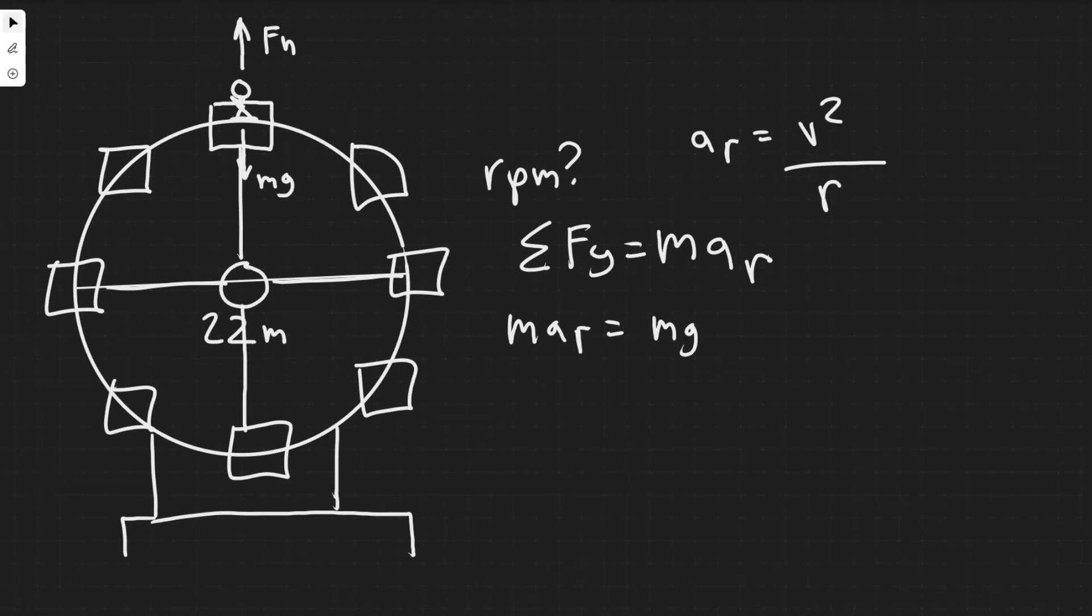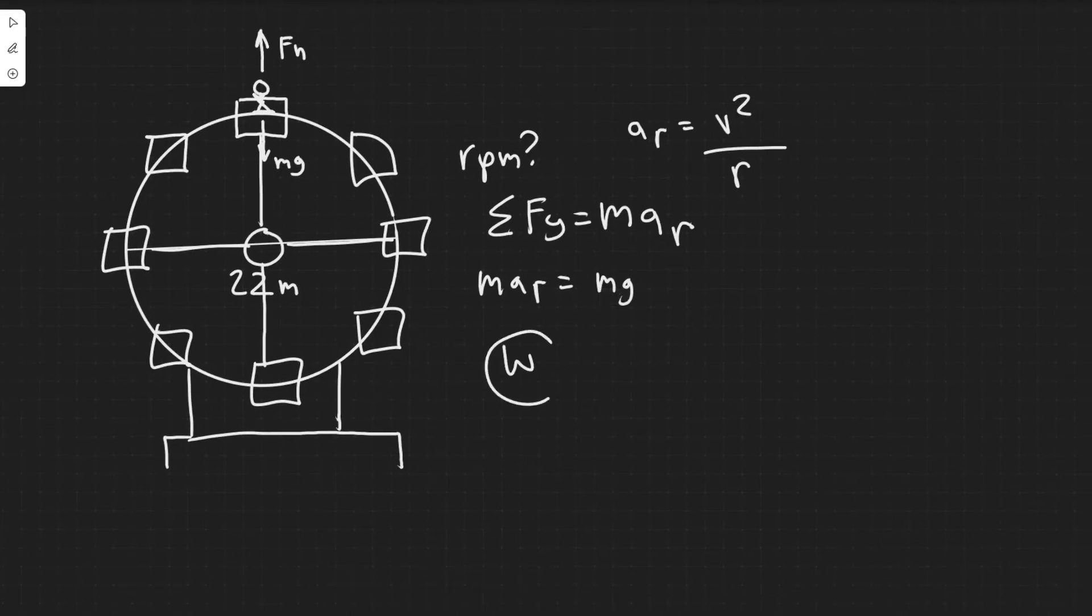And then if we can get the velocity, we can convert that into omega, which is your angular velocity, because we know that v equals r omega. And then omega is in radians per second. And we can convert radians per second into revolutions per minute. So that's kind of the thing we're doing.